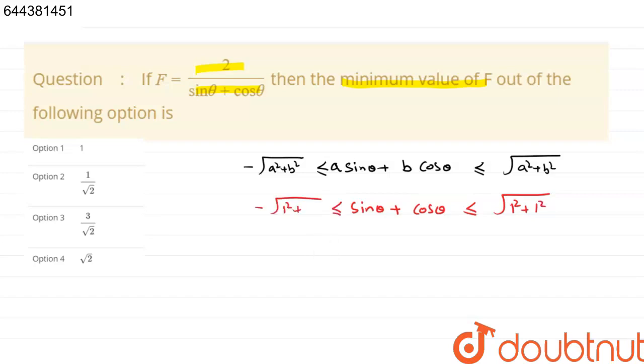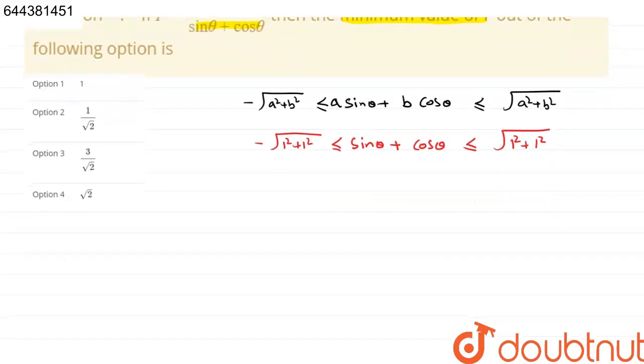Therefore, sin theta plus cos theta lies between, sorry, from minus root 2 to plus root 2.